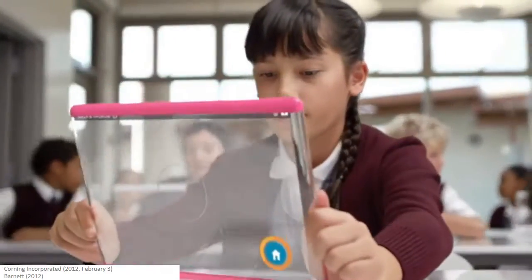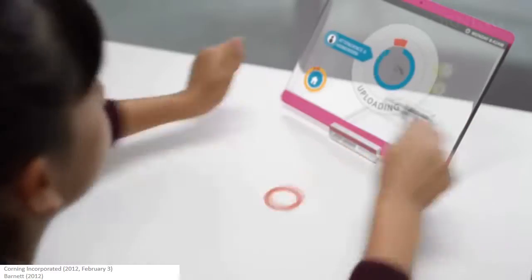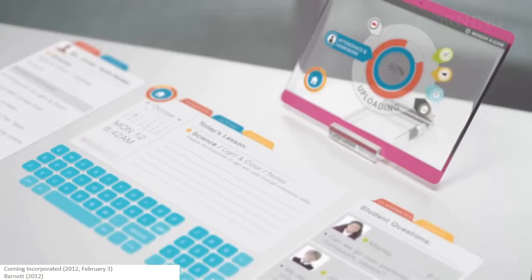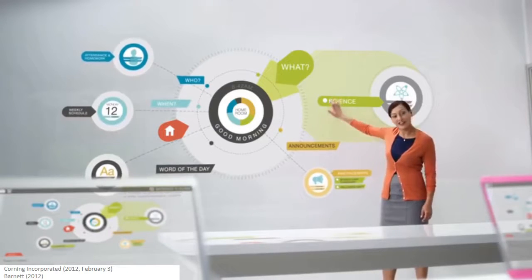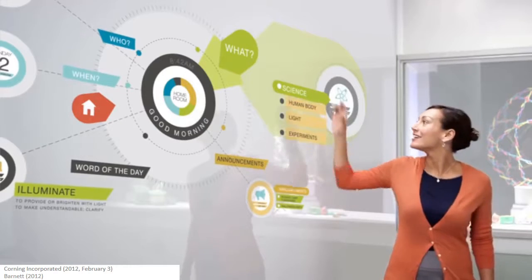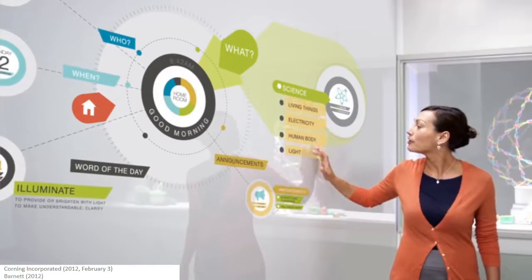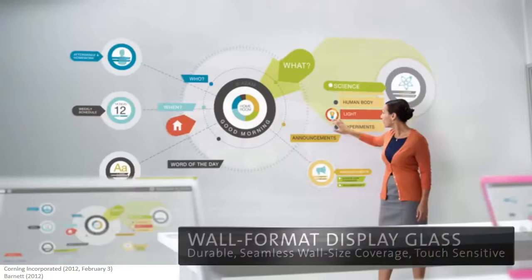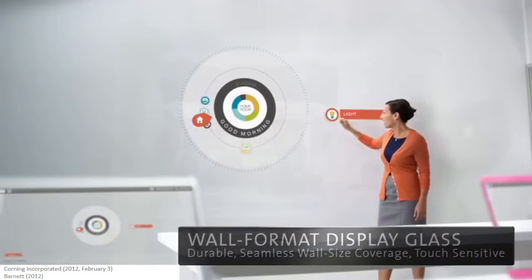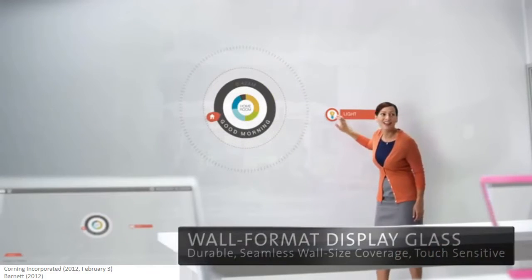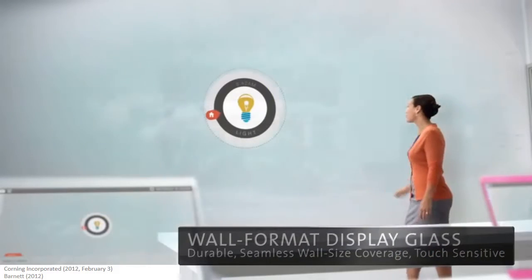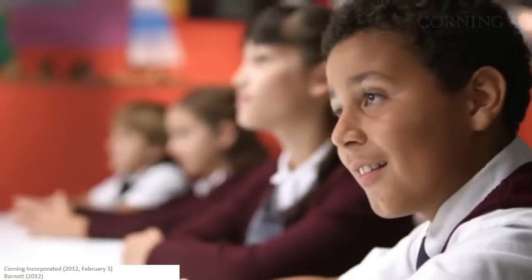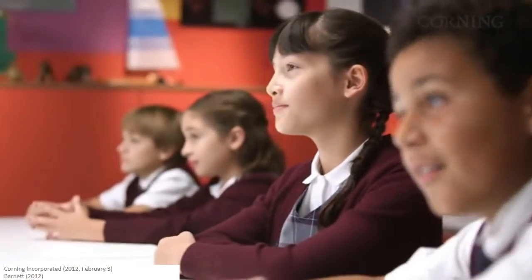Globalisation, increased diversity and the rapid and continuing evolution of technology makes it impossible for us as teachers to know for certain what the future world we are moulding our students to be citizens of will look like. How do we as teachers prepare students to be active participants in a future world which is radically unknowable?